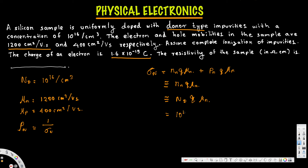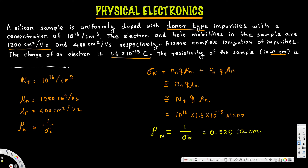Calculating sigma n: 10 to the power of 16 times 1.6 times 10 to the power of minus 19 times 1200. Since the answer is in ohm centimeter, we keep units in centimeter. Finally, resistivity rho equals 1 over sigma n, and the result is 0.520 ohm centimeter. That's the final answer.